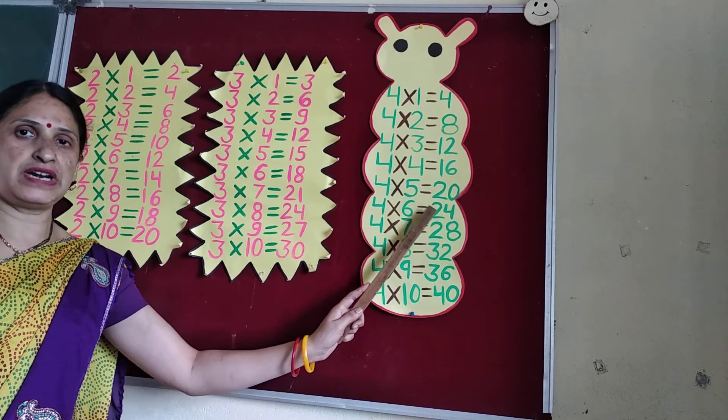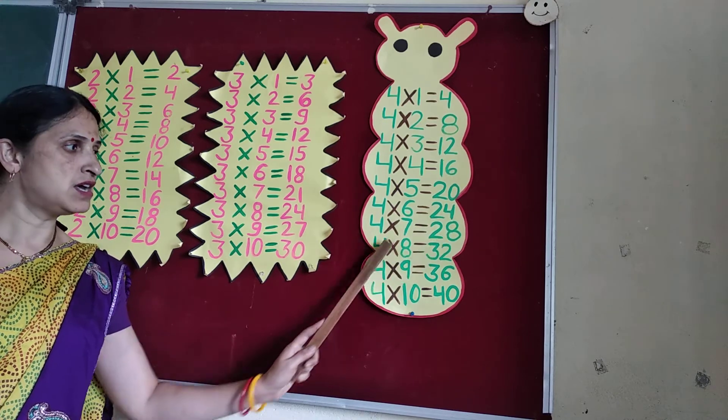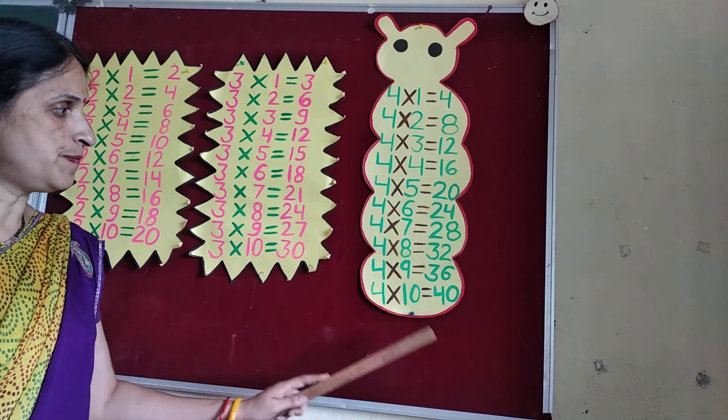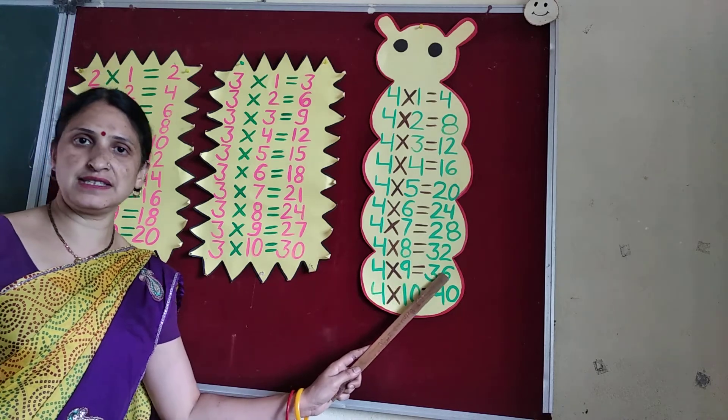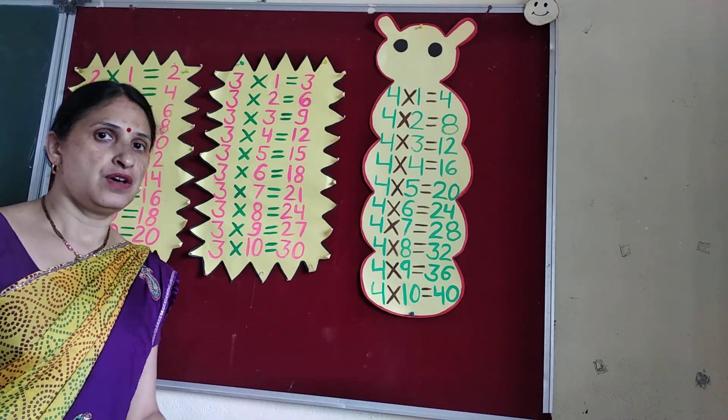4 6's are 24. 4 7's are 28. 4 8's are 32. 4 9's are 36. 4 10's are 40.